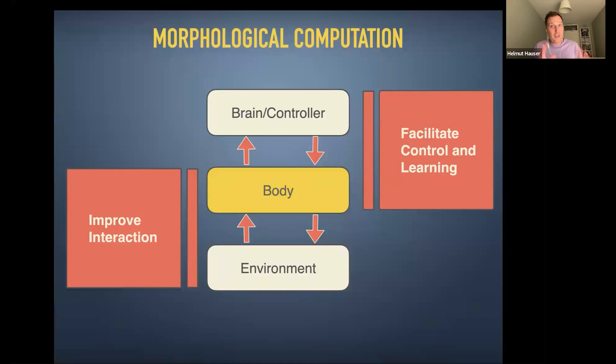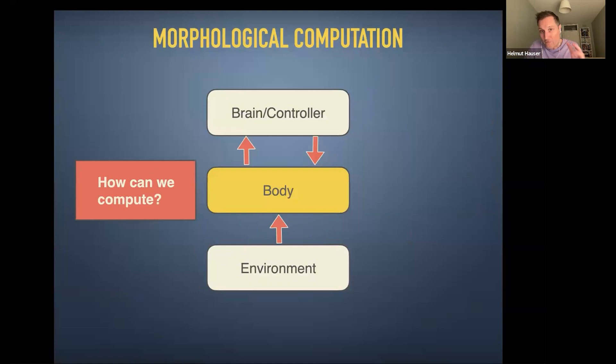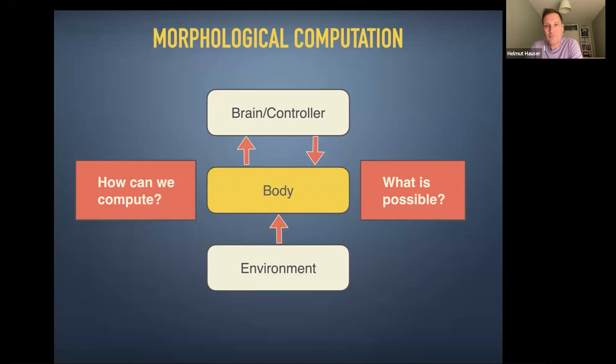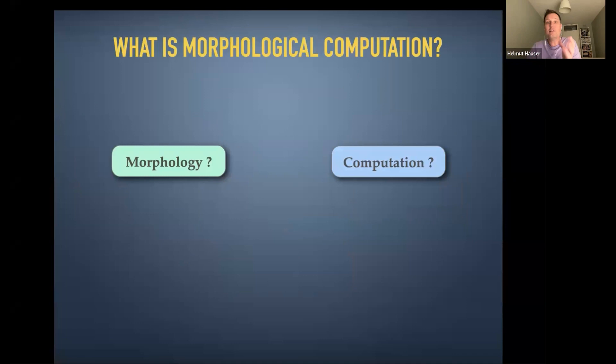We developed theoretical models that tell us what kind of bodies are needed for morphological computation and what kind of computation we can outsource through the body itself. We asked what kinds of bodies are really important, what is possible, and what are the limitations when we think about theoretical models. In order to do that, we have to define what morphology is and also what computation is.